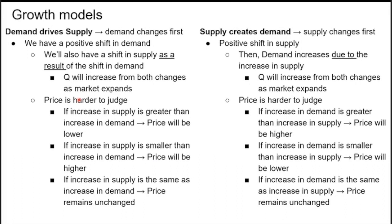The growth models are demand drives supply and supply creates demand. In demand drives supply, demand changes first — a positive shift in demand causes a shift in supply as a result. Quantity will increase from both changes as the market expands; however, price is harder to judge: if the increase in supply is greater than demand, price will be lower; if less, price will be higher; if equal, price remains unchanged. In supply creates demand, supply changes first and demand follows — any positive shift in supply increases demand, and Q increases from both changes.